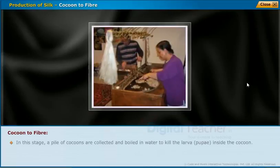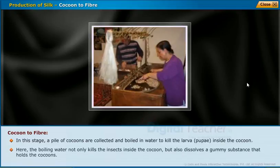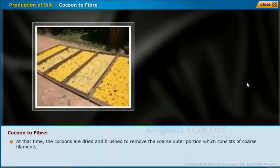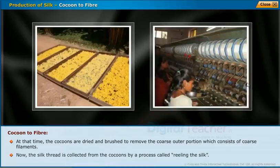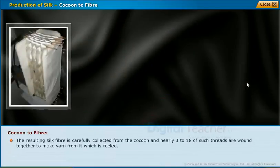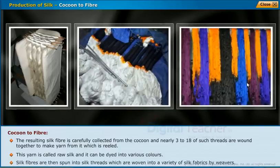In the cocoon to fiber stage, a pile of cocoons are collected and boiled in water to kill the larva or pupae inside. The boiling water not only kills the insects but also dissolves the gummy substance holding the cocoon. The cocoons are then dried and brushed to remove the coarse outer portion. The silk thread is collected by a process called reeling, done with special machines called reelers and twisters. Nearly 3 to 18 threads are wound together to make raw silk yarn, which can be dyed into various colors and woven into silk fabrics.